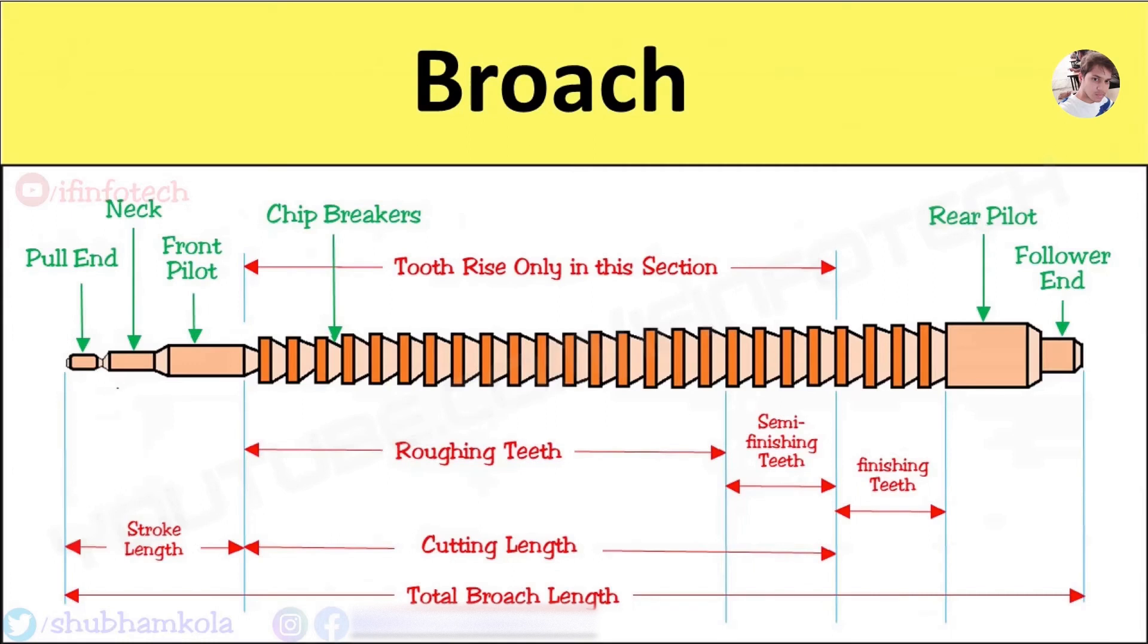Now you see the nomenclature of the broach. The front pilot guides the broach in the hole and also works as a rough no-go gauge. The rear pilot determines the size of the finished hole.